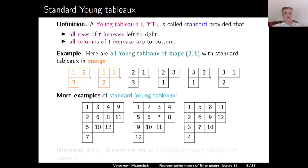A slight variation: we can fill in our numbers top to bottom and then left to right — that is, column-wise — getting 1, 2, 3, 4, 5, 6, 7, 8, 9, 10, 11, 12. This also yields a standard Young Tableau.